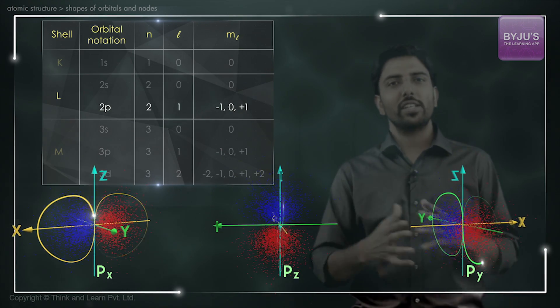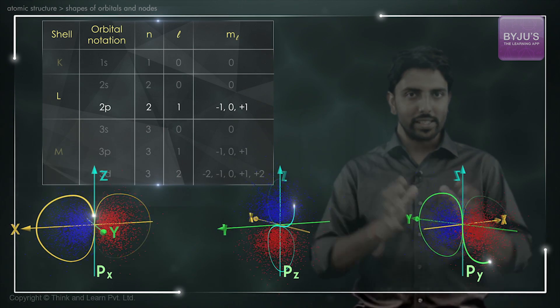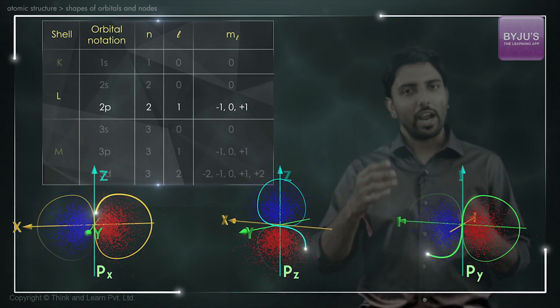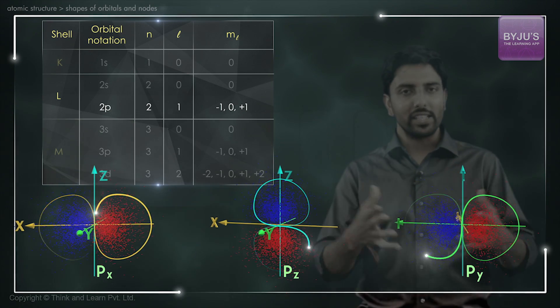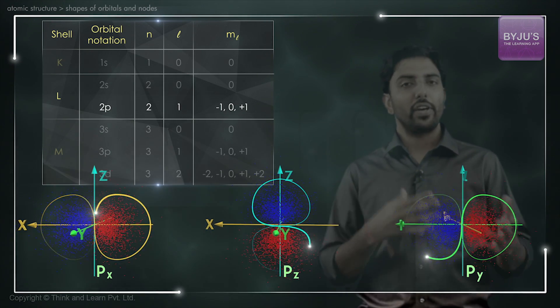Hence, orientation comes into the picture, and it makes sense for these subshells—the n,p subshells or n,d subshells—to have different orientations.